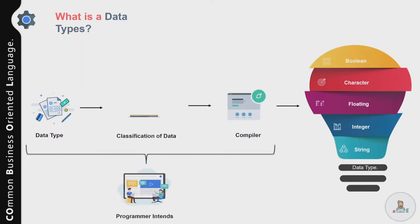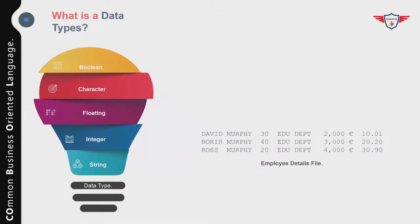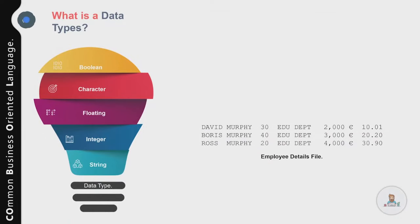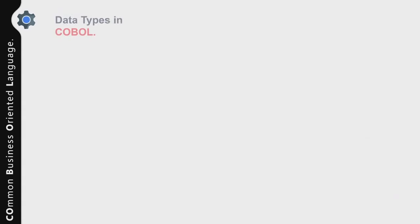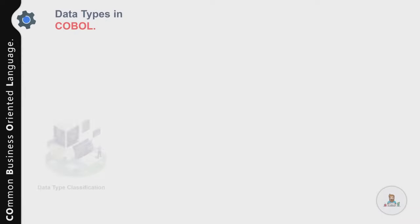We process data in various ways such as performing mathematical calculations or sorting it in a specific format. Data comes in different forms — for example, an employee detail file may contain: employee name (a string of characters), employee age (an integer), department name (a string), employee salary (an integer), and employee monthly tax (a floating value with a fraction part, such as 10.01).